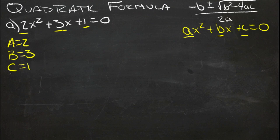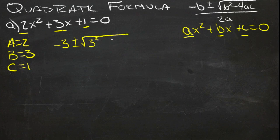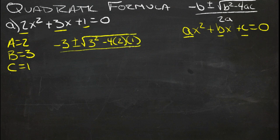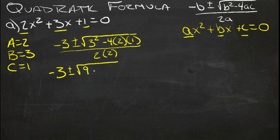So if we take those three values and put them into the quadratic formula, we get negative b plus or minus the square root of b squared minus 4ac all over 2a. Now we just simplify the numbers. We'll have negative 3 plus or minus the square root of 3 squared, which is 9.